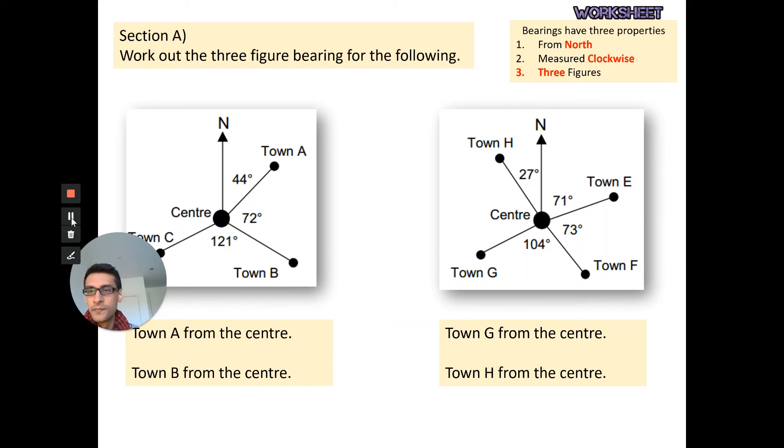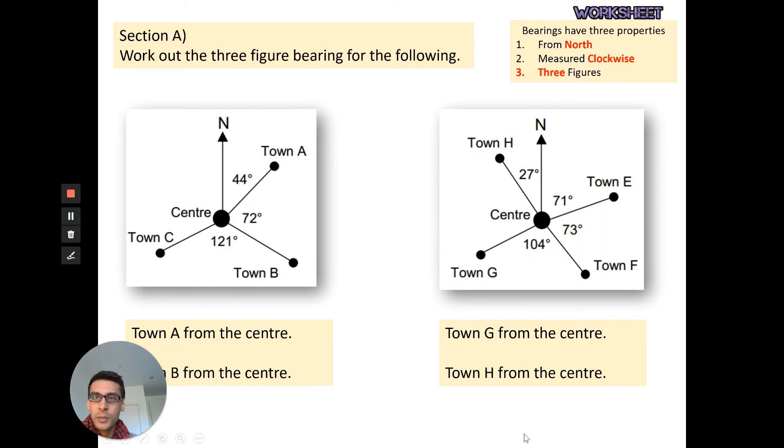Looking at the next examples here, I want to work out the three figure bearings for the following. Town A from the center. Well, there's the center. I want to go to town A, so I can see straight away it's going to be this angle here, so it's 44 degrees. The second question, I want to go B from the center, so it's going to be 44 plus 72, and then I can see that's going to be 116. Try the question on the right. You should have 248 and 333.